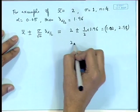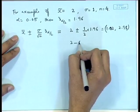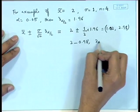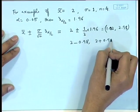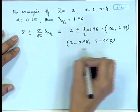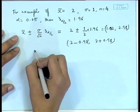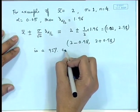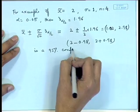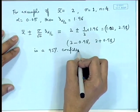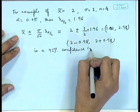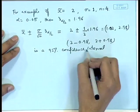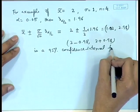For example, if x-bar = 2, sigma = 1, n = 4, and alpha = 0.05, then z_alpha/2 = 1.96. So x-bar ± (sigma/root n) z_alpha/2 = 2 ± (1/2)(1.96) = 2 ± 0.98, giving an upper value of 2.98 and a lower value of 1.02. This is the 95 percent confidence interval for mu.